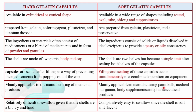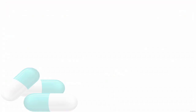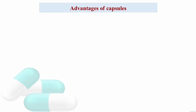Soft gelatin capsules are involved in manufacturing of paintballs, medicinal marijuana, body supplements like vitamins, and pharmaceutical products. Patients find it relatively difficult to swallow hard gelatin capsules compared to soft gelatin capsules because the shell is dry and hard. Soft gelatin capsules are easier to swallow since the shell is soft and flaccid.